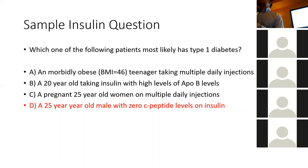ApoB is a marker for lipids only. It has no bearing on whether someone has type 1 or type 2 diabetes.